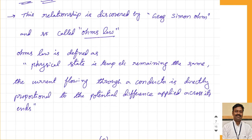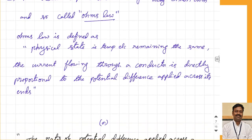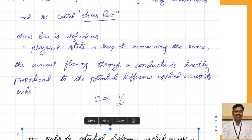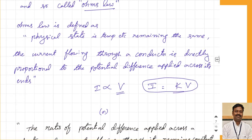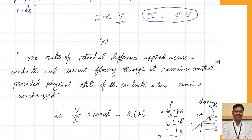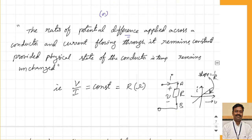He made experiments in the lab and gave the statement: the physical state — that is temperature — remaining the same, the current flowing through a conductor is directly proportional to the potential difference applied across its two ends, i.e., I is proportional to V, or I equals K times V. He further defined that the ratio V by I remains constant, and this constant he defined as the resistance.